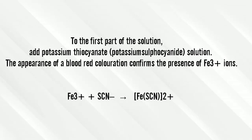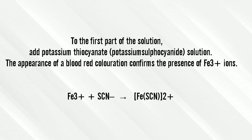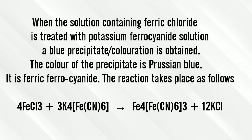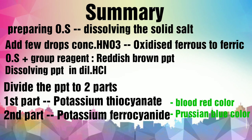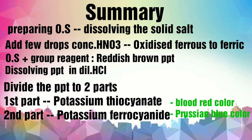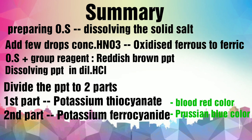The potassium thiocyanate reacted with the ferric ions forming ferric thiocyanate, which has blood red color. This is used in the classical fake blood experiment. The potassium ferrocyanide reacted with the ferric ions forming ferric ferrocyanate, which is Prussian blue in color.